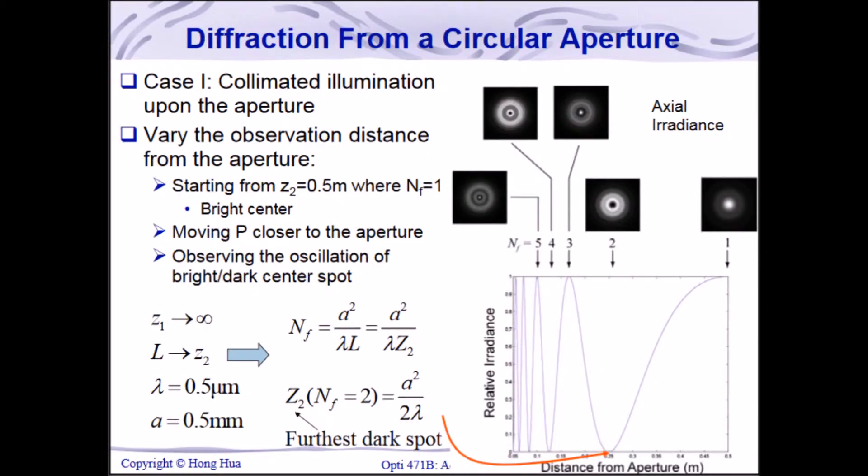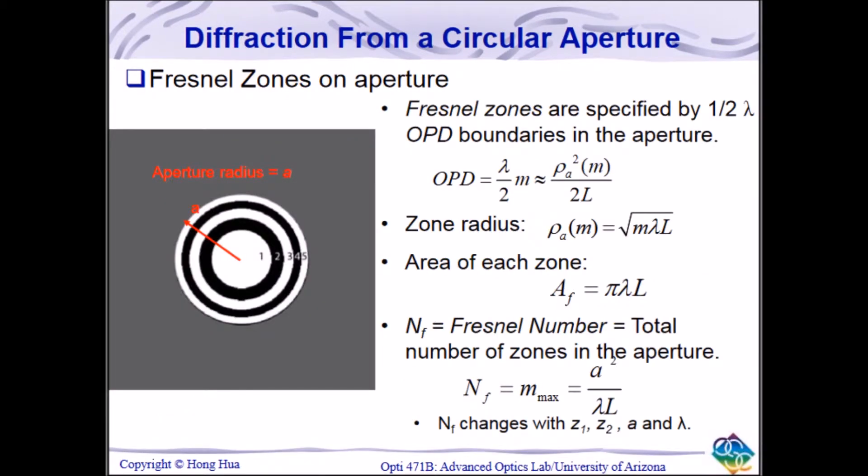Fresnel diffraction through a circular aperture appears on an observation plane as a fringe pattern consisting of a circle encircled by a series of concentric rings. The number of rings or fringes, as well as whether the central circle is light or dark, can be changed by adjusting the distance of the observation plane from the aperture and described by the Fresnel number corresponding to the observation plane to aperture distance.